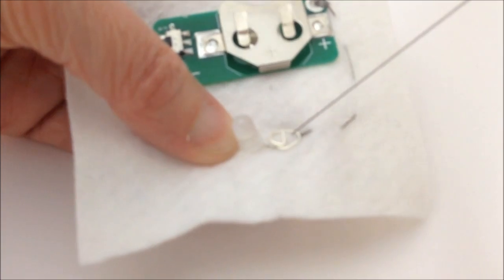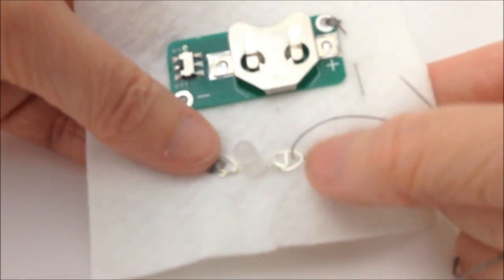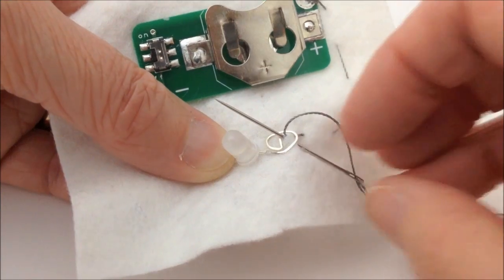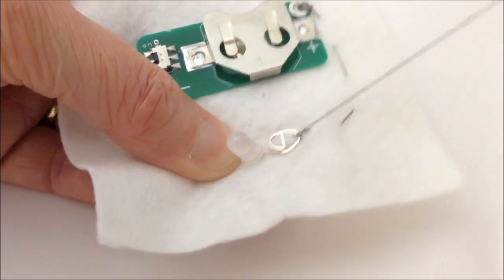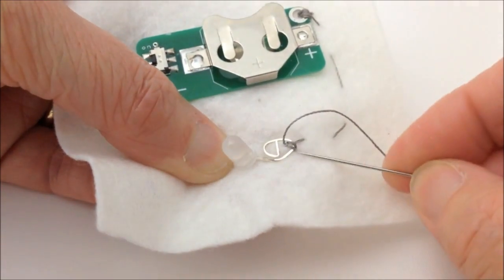Going into the curved leg on the LED. We're going to do the five or six stitches on the side of the leg just as we did before.